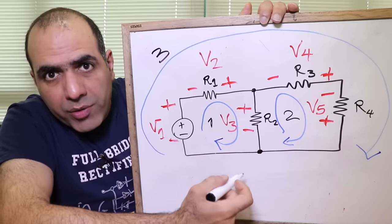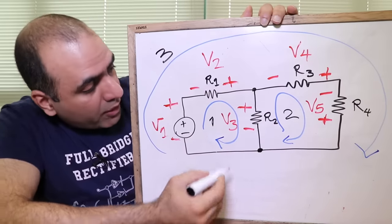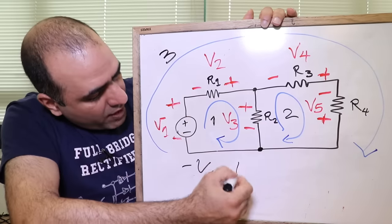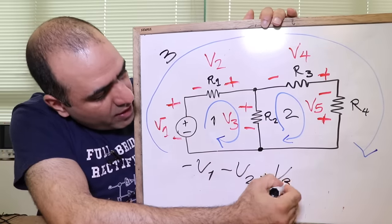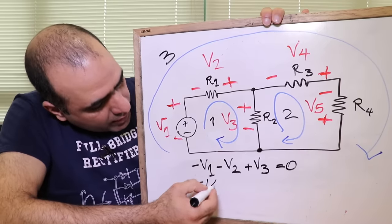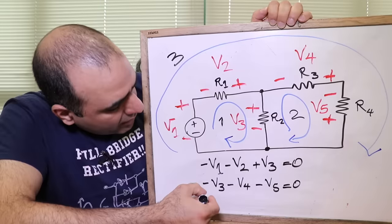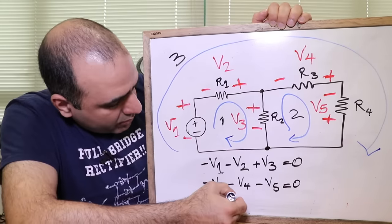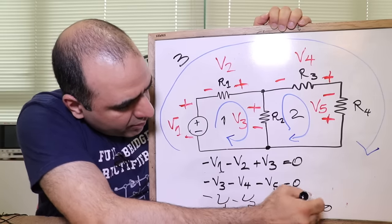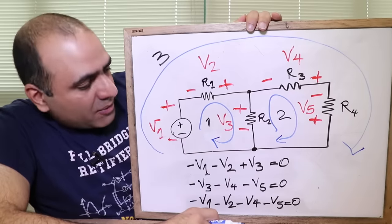Now moving through a loop, if you enter the positive terminal of a component, write a positive voltage for it. And if you enter a negative terminal, write a negative voltage for it. Like here, we enter negative V1 minus V2 plus V3 is equal zero. And make sure you write all the voltages in that loop. In the next one, we have minus V3 minus V4 minus V5 is zero. And in the big loop, we have minus V1 minus V2 minus V4 minus V5 is zero. And of course, if you move the other way in the loop, all these voltages will be positive, which is the same thing. And you have three equations just like that.